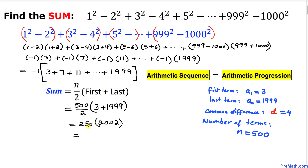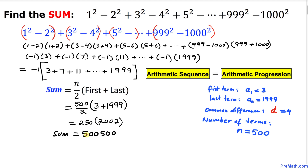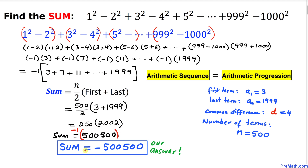Simplifying: 500 / 2 = 250, and 3 + 1999 = 2002. So 250 × 2002 = 500,500. This is the sum inside the bracket. But we still have the −1 factor outside, so we multiply: −1 × 500,500 = −500,500. That's our final answer. Thanks for watching, and please don't forget to subscribe for more videos!